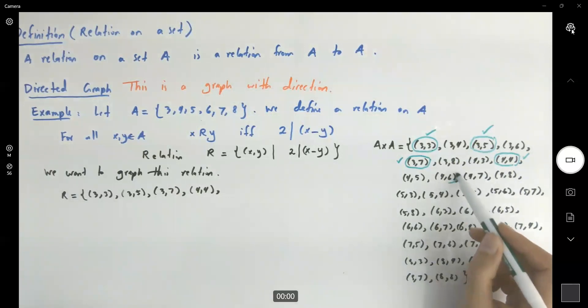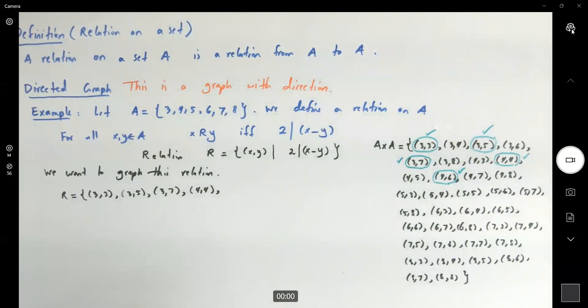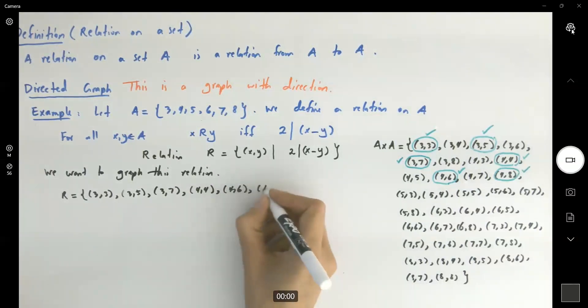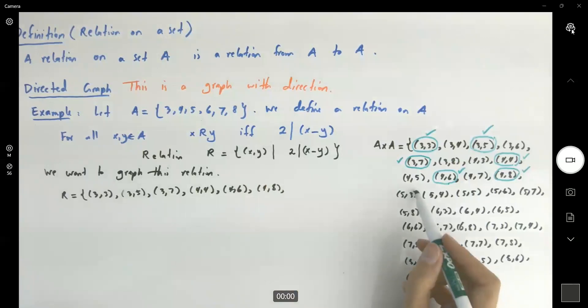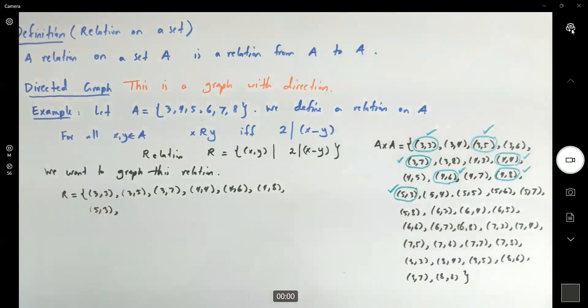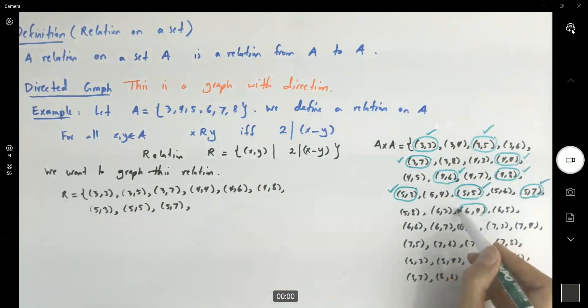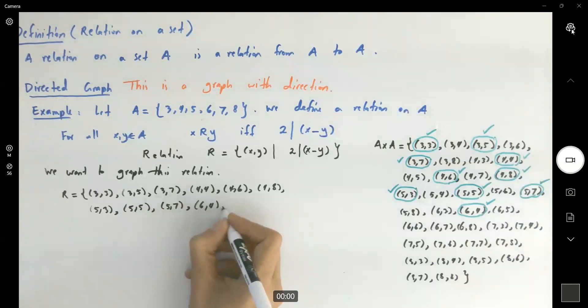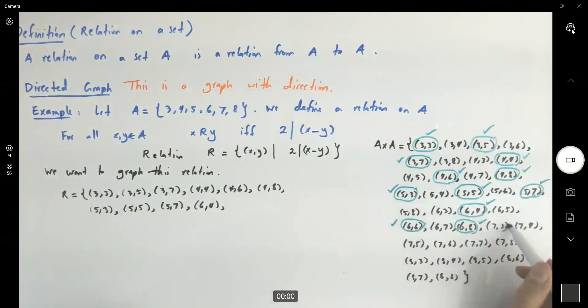4 and 5, no. 4 and 6, yes. 4 comma 6. 4 and 7, no. 4 and 8, yes. The difference is even. 5 and 3, the difference is 2. 5 and 4, no. 5 and 5, yes. 5 and 7, yes. So 5 and 5, 5 and 7. Next up, 6 and 4, then we have 6 and 6, 6 and 8, 7 and 3.